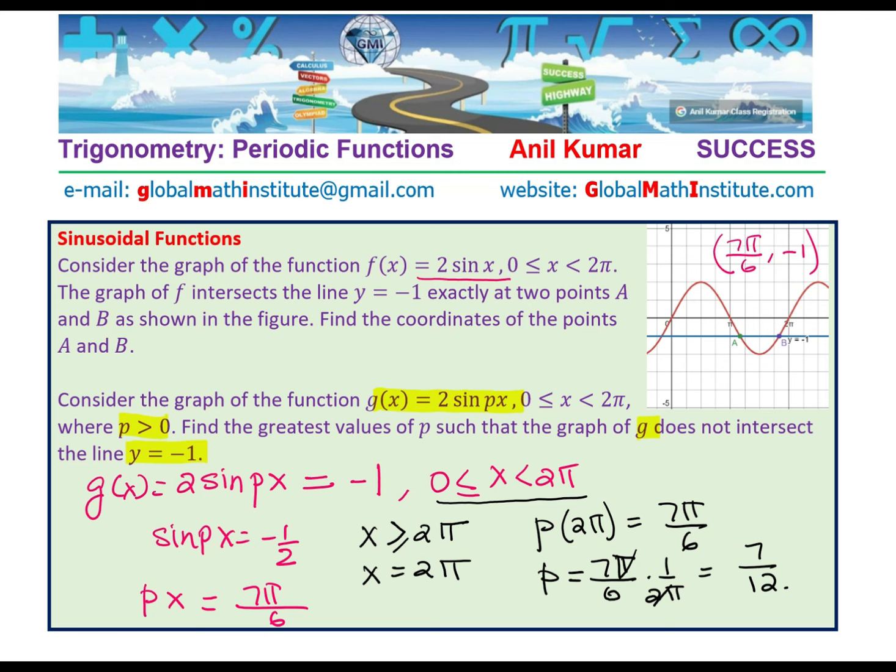Find the greatest value of p, the greatest value of p will be 7/12 for no solution within 0 to 2π of x. So, the curve actually stretches horizontally to the extent that it comes to -1 only after 2π when p is 7/12. Make sense?